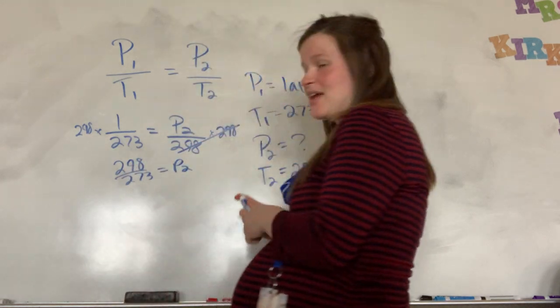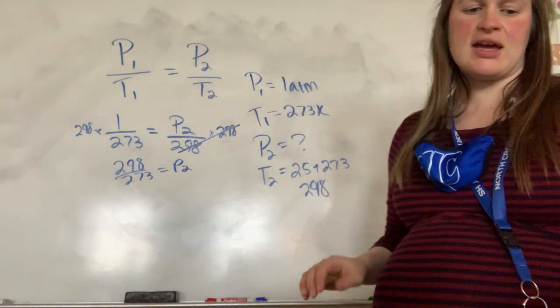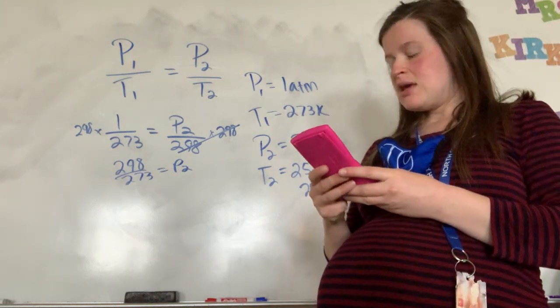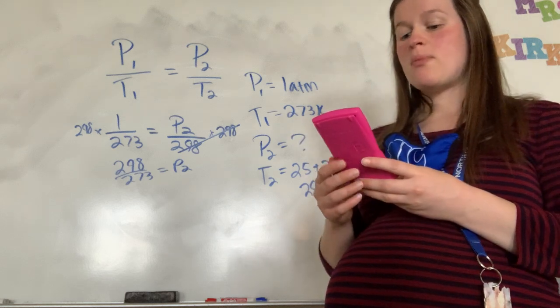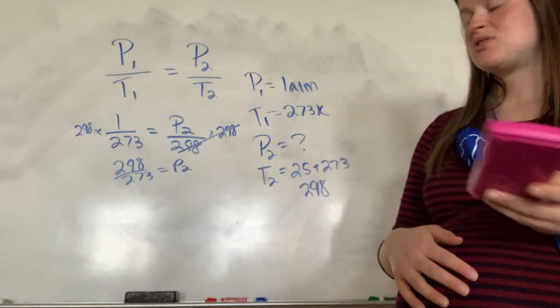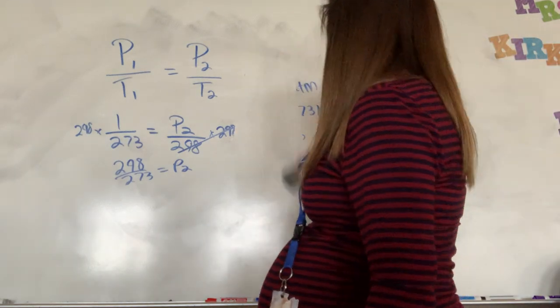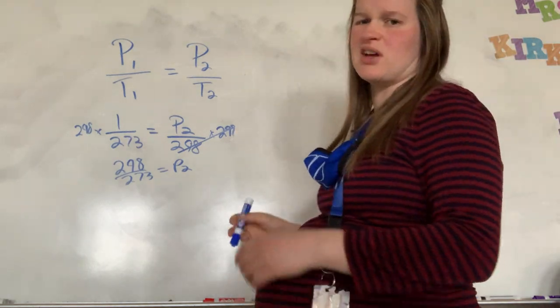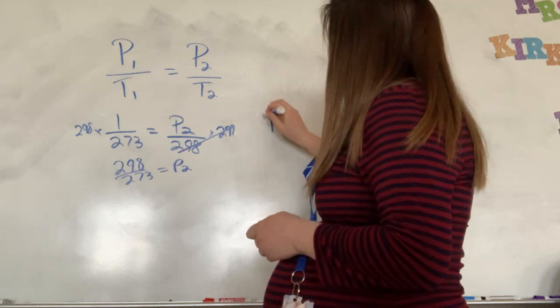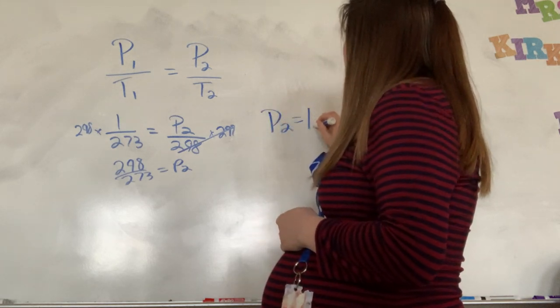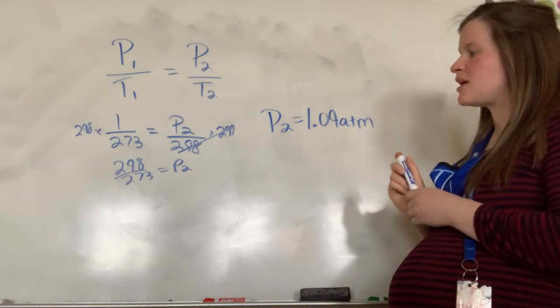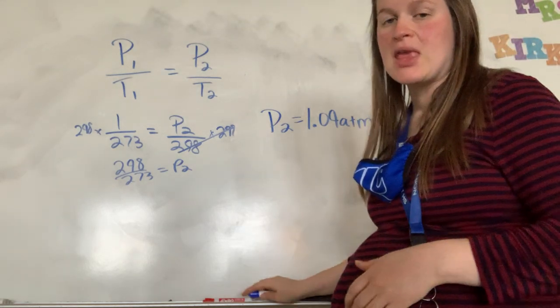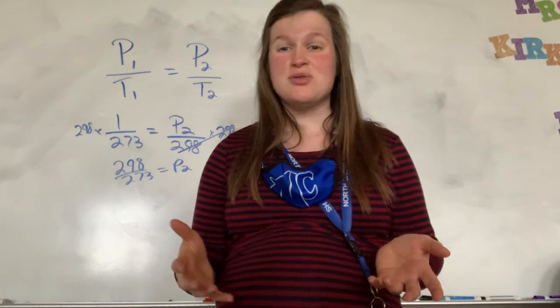And then we have 298 over 273 equals P2. And so then I just need to divide. And so whenever I divide, I get my pressure to be 1.09 atmospheres. So P2, because I know there's a glare going on, P2 is equal to 1.09 atmospheres because we plugged in and we solved.